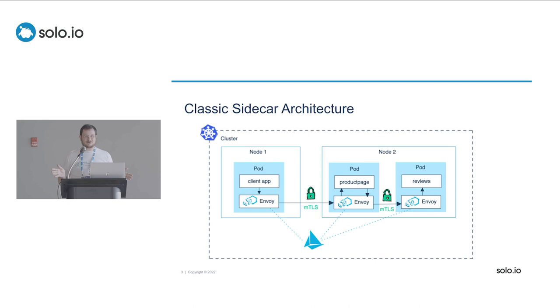So I'm going to go through this rather quickly, but it's good just to start with the classic sidecar architecture. The important part is that the Istio API, by API I mean the custom resources, the Istio custom resources, the virtual services, the destination rules, service entries, et cetera, are all implemented by the envoy instances that are injected into each pod, the sidecar.